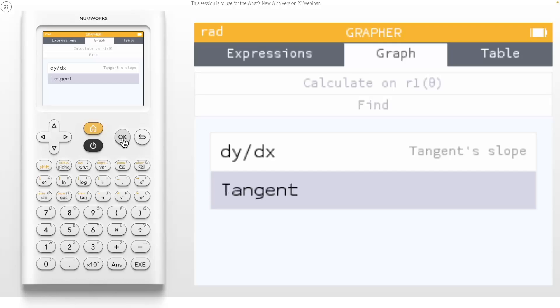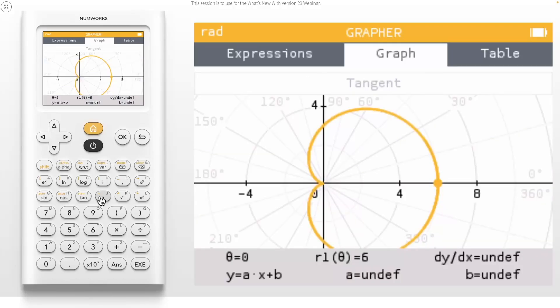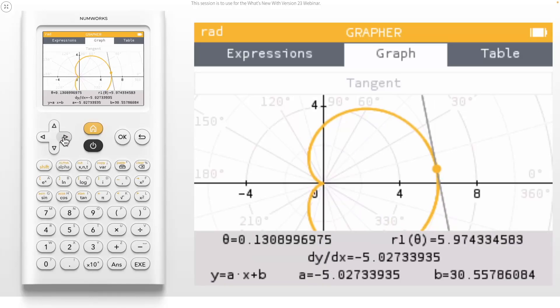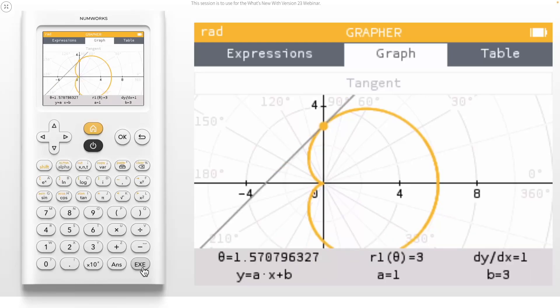Just like with our function's tangent line, you can input a value for theta to calculate a specific tangent line. For example, inputting pi over 2 will create the tangent line. All of these great derivative features work the exact same way for parametric functions as well. You can toggle on the first and second derivative values in the options menu and calculate dy dx and a tangent line in the find menu.